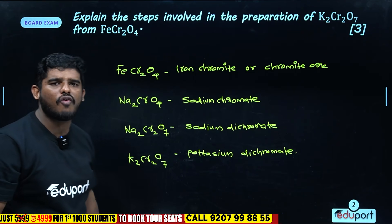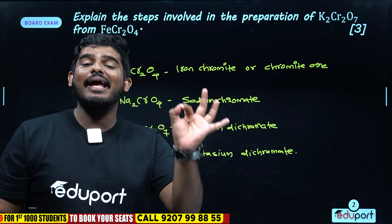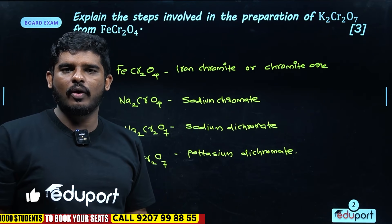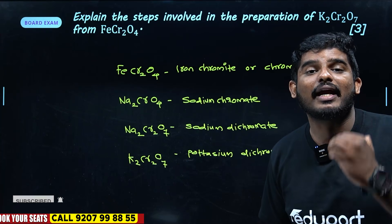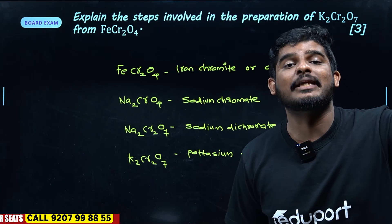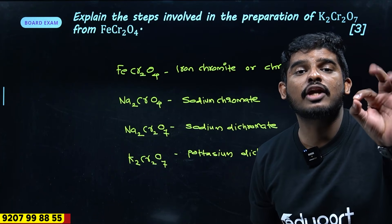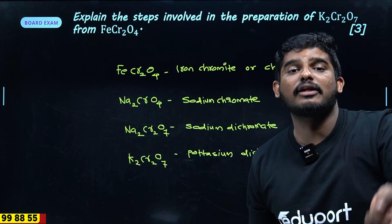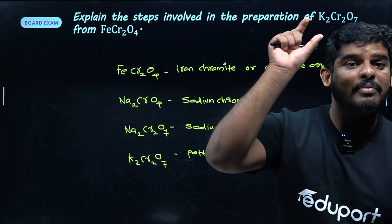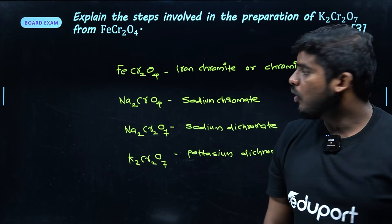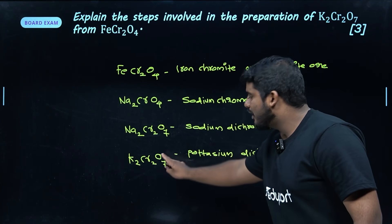If you have FeCr2O4, it is called Chromite or Iron Chromite. Na2CrO4 is called Sodium Chromate. Na2Cr2O7 is called Sodium Dichromate, and K2Cr2O7 is called Potassium Dichromate. It is yellow and orange in color.